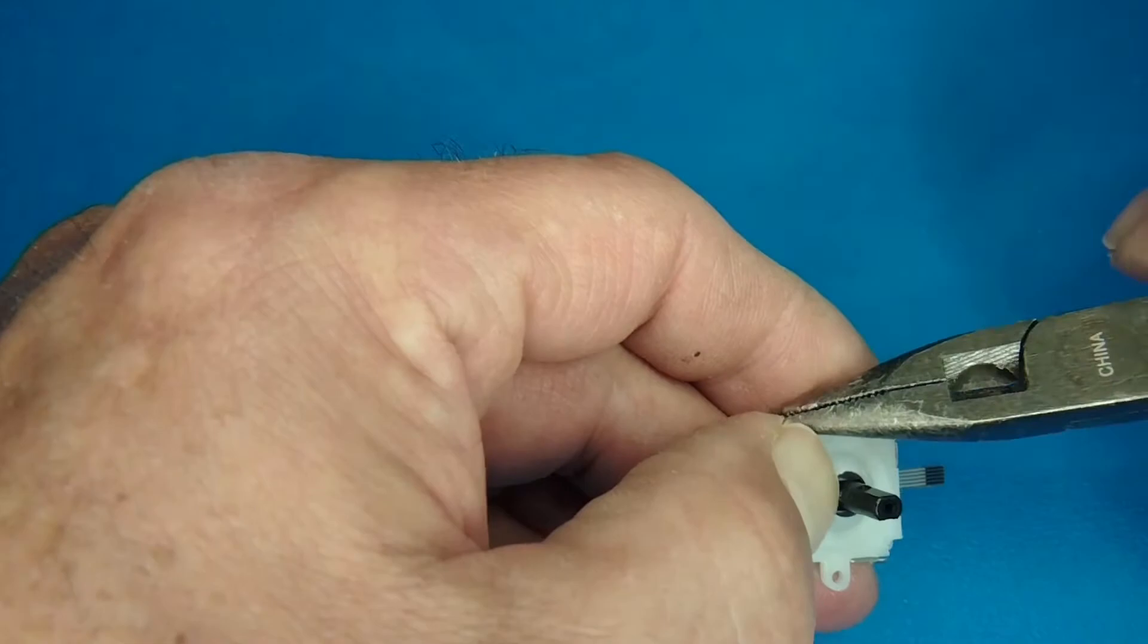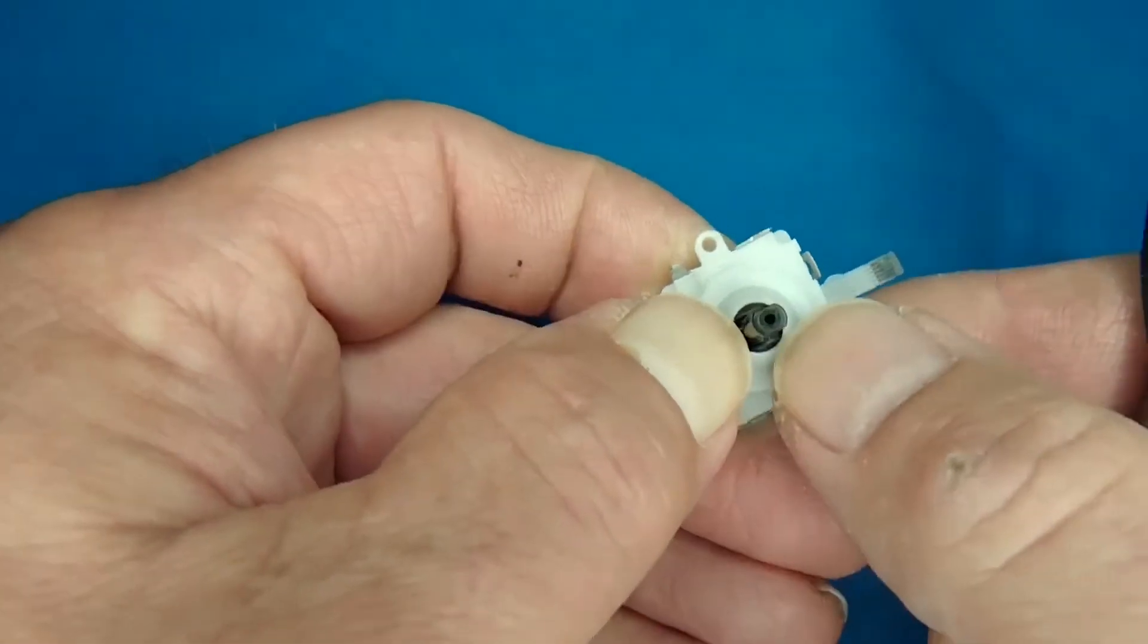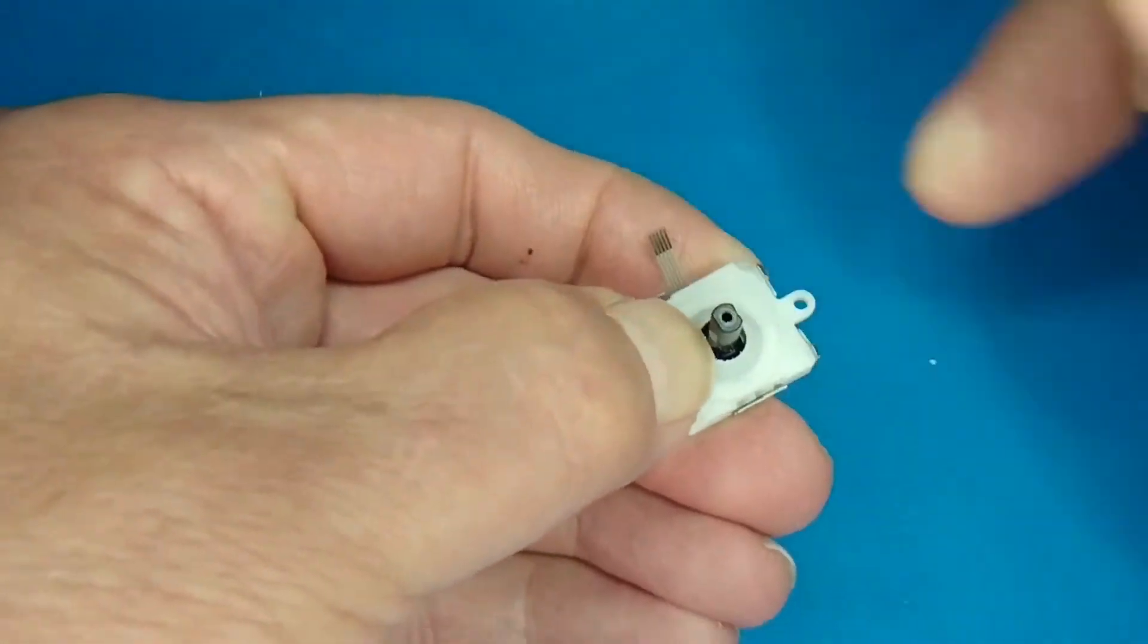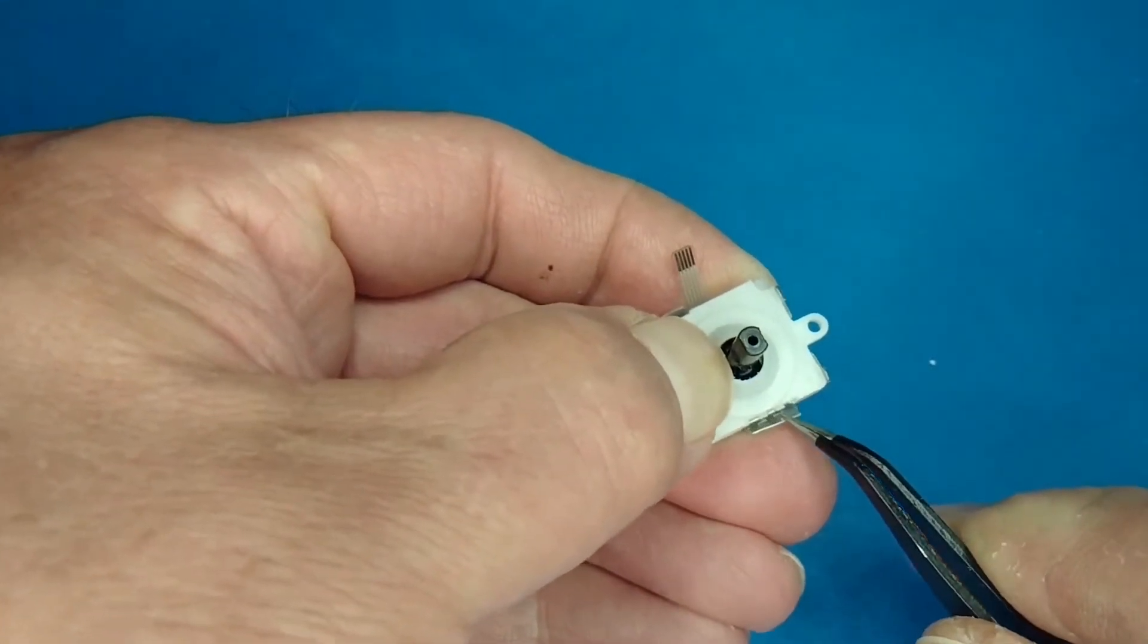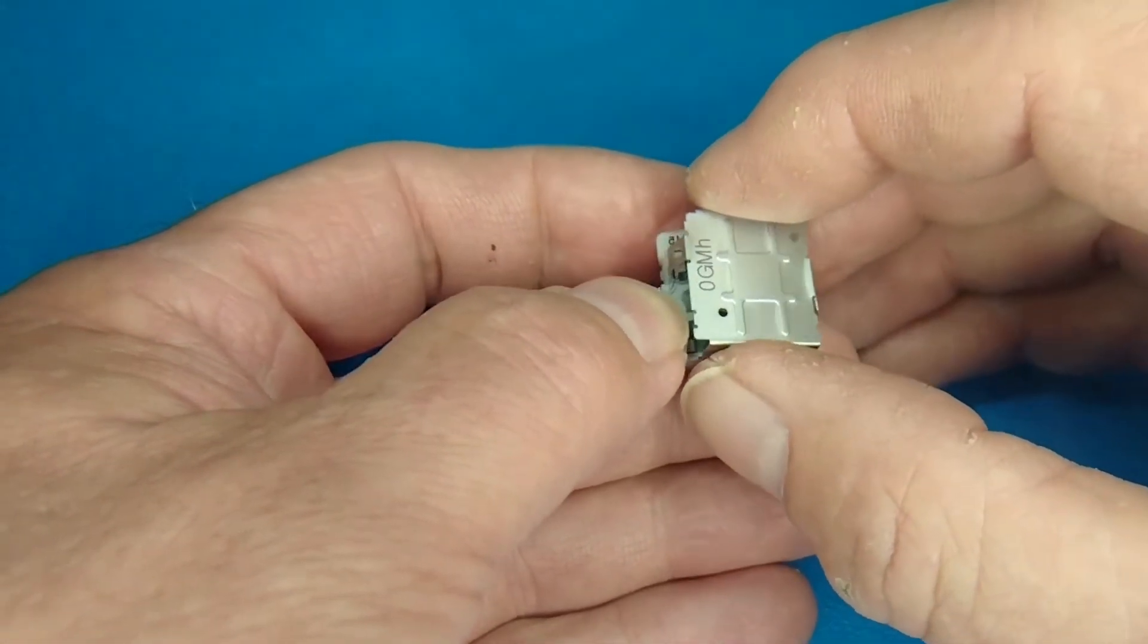All right, and then there's two tabs on each side, a small one and a big one. And you want to spread those open just a little bit because they kind of have little hooks that are holding on. And don't let the thing come apart until you're ready for it. So I hold it down, lift the back off.